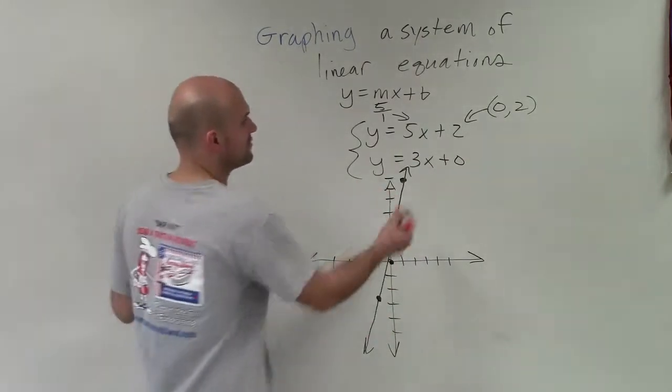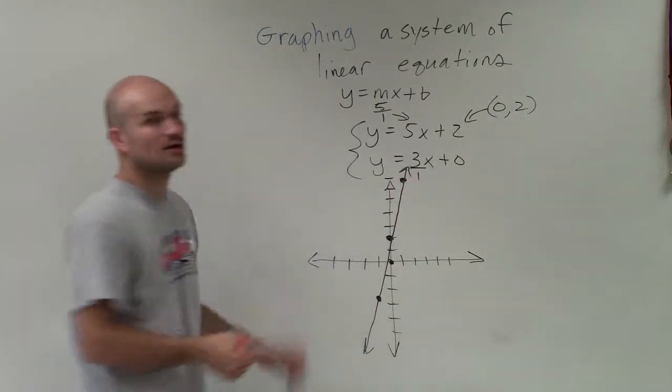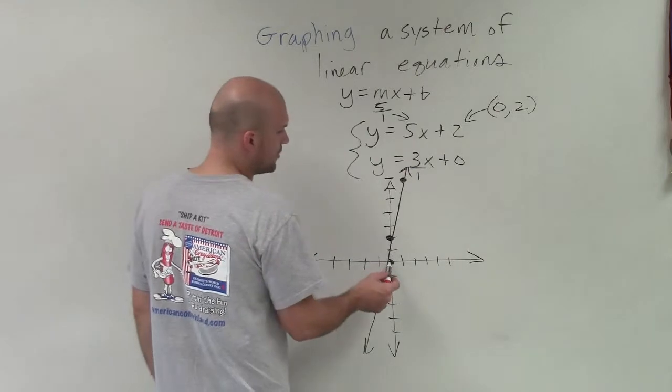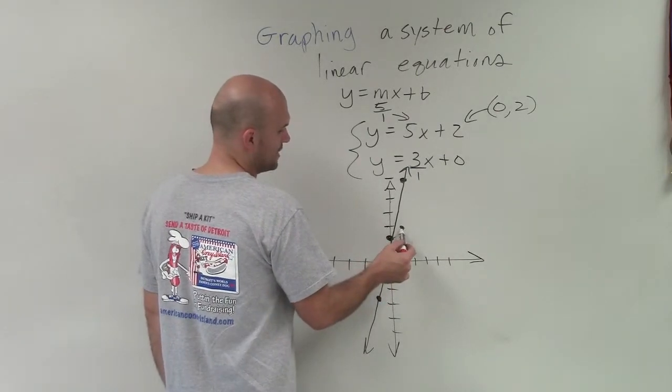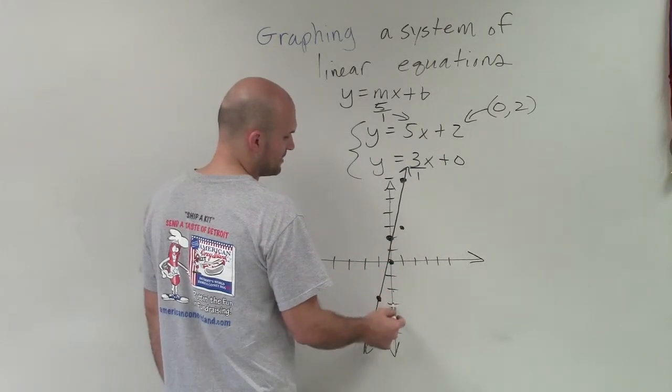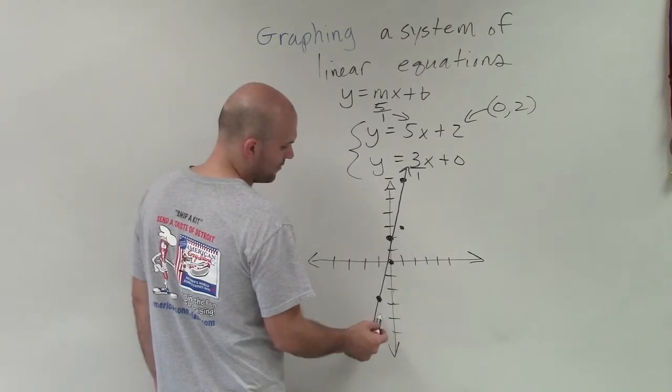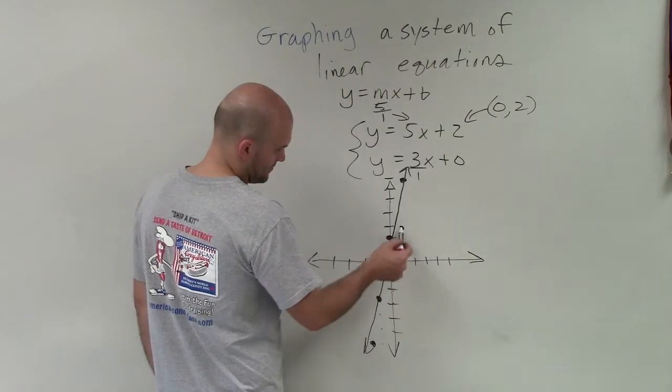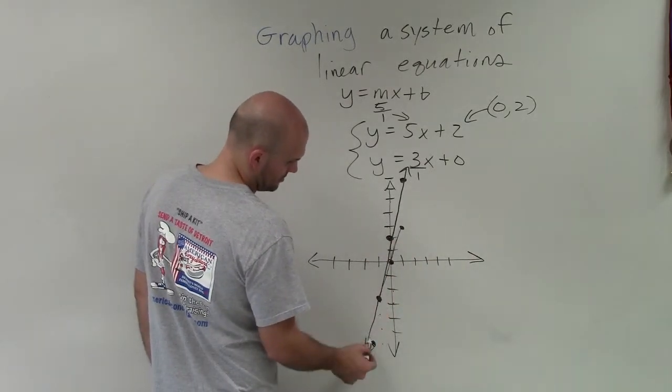And now the slope is going to be 3 over 1. I can just put the 3 over the 1. So that's going to tell me to go up 3 to the right one, or I could also go down 3 to the left one, 1, 2, 3 to the left one.